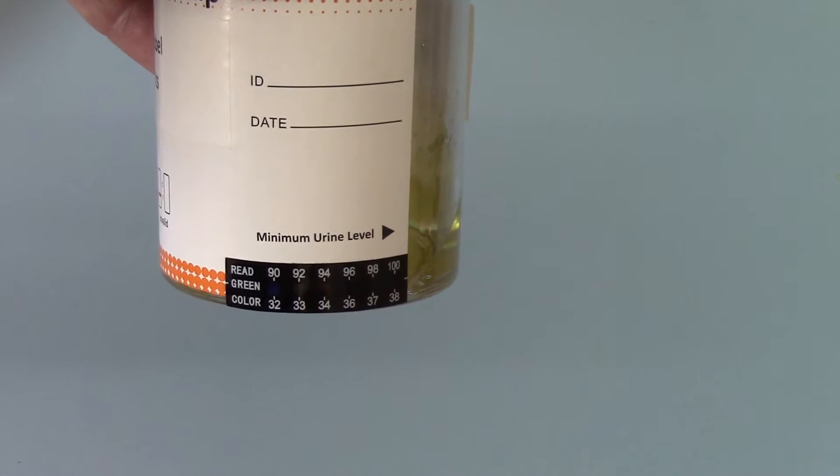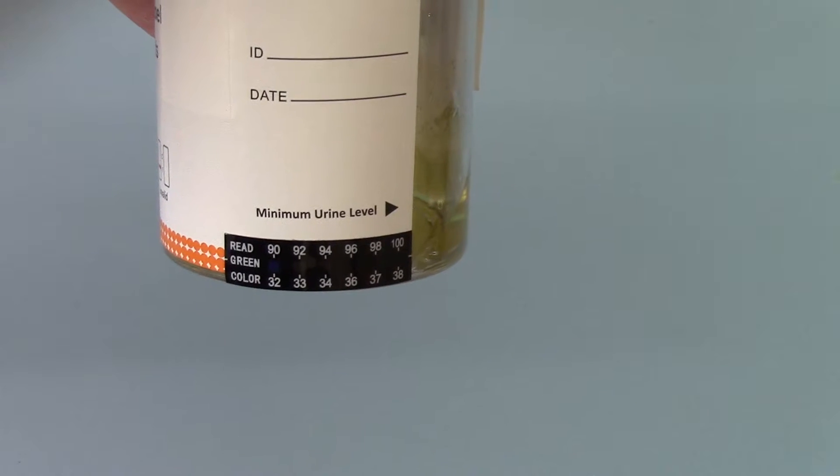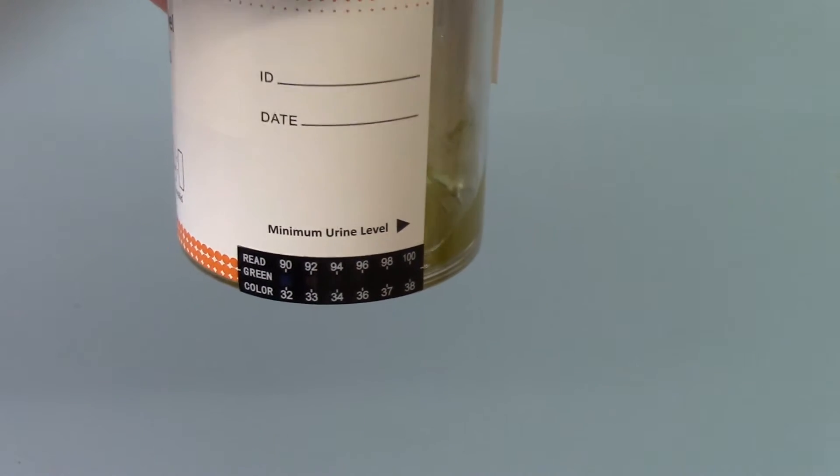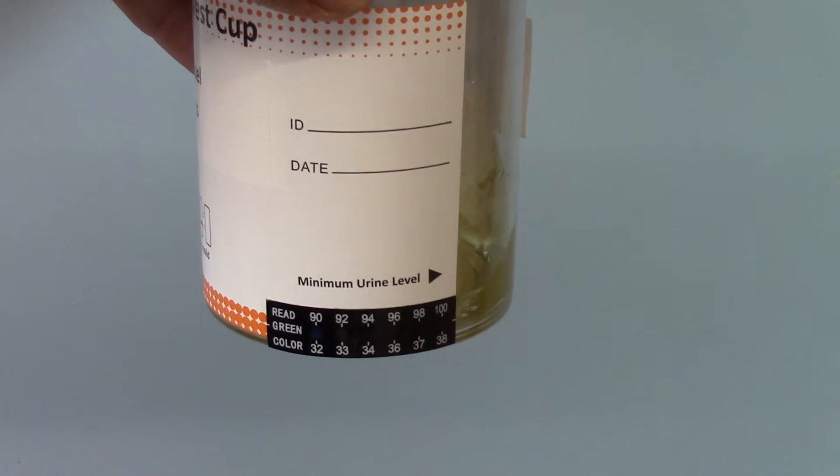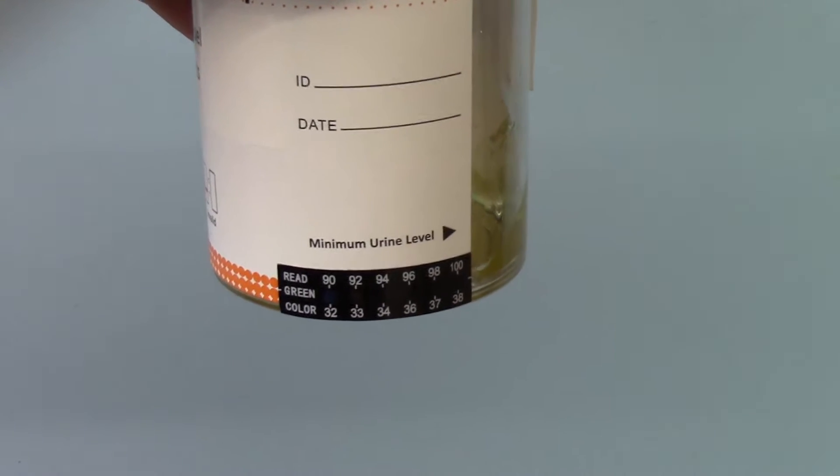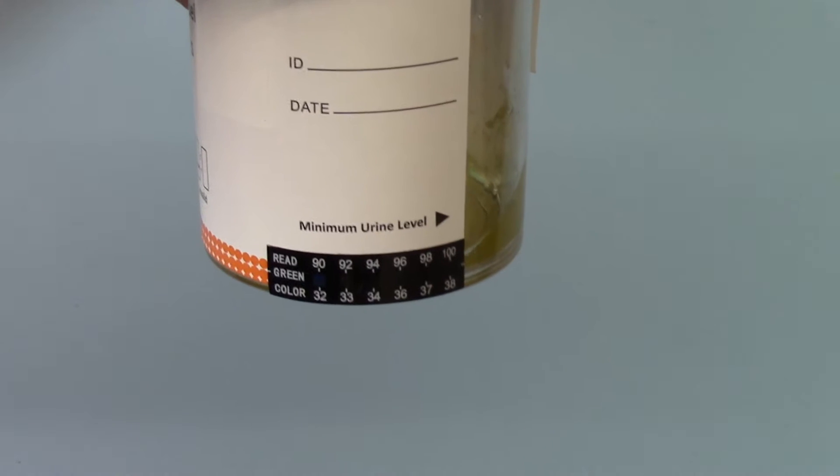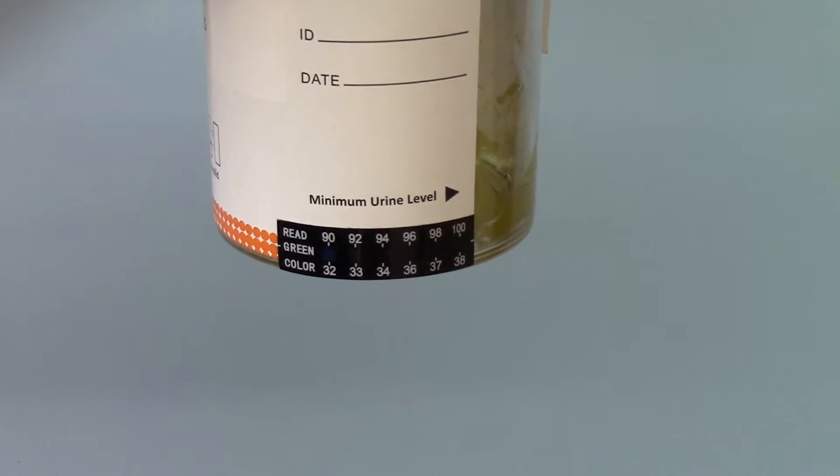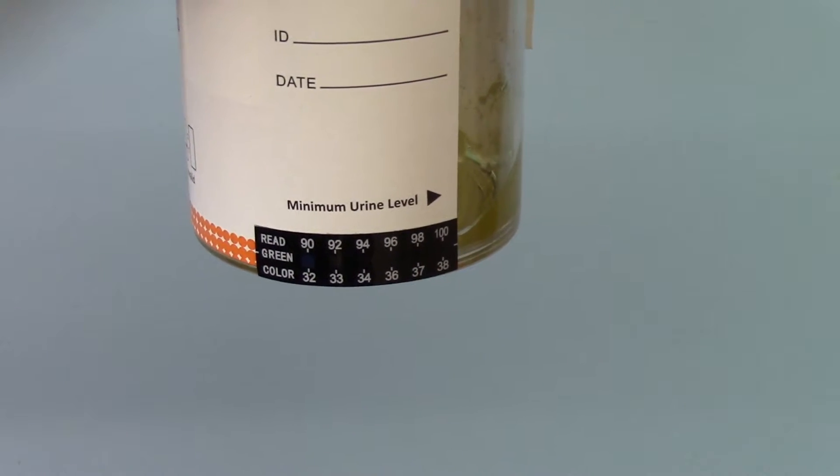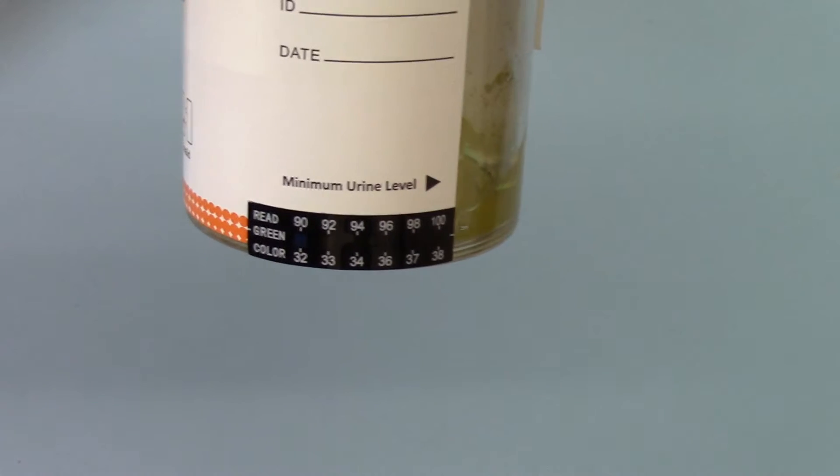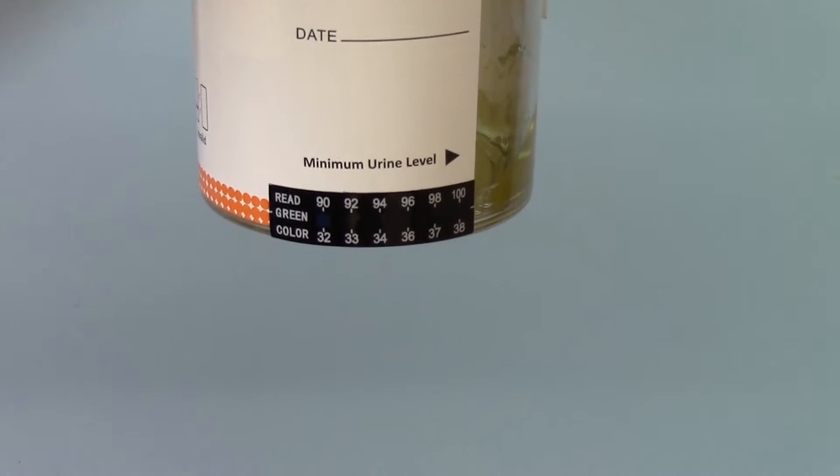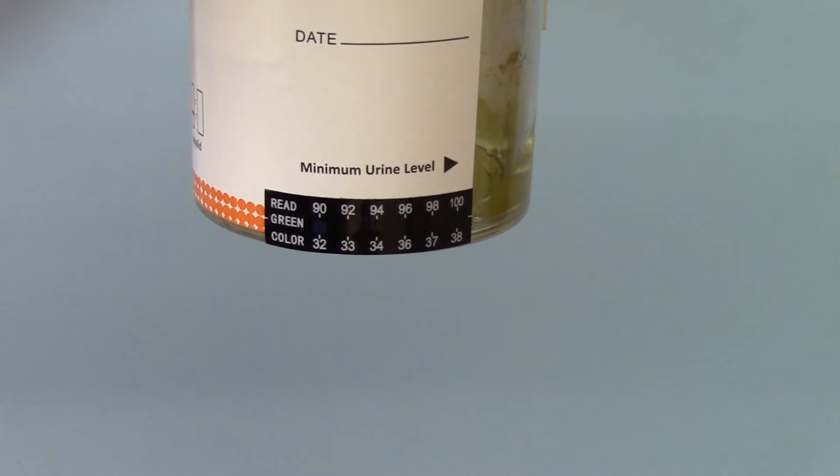Now the urine temperature will vary depending on how much has been put in to the cup. The lower the volume of urine that's been put in, the more it's likely to be affected by cooling as it goes into the actual body of the plastic cup. The advice from the manufacturer is that the plastic cup should be at room temperature before the urine is added.